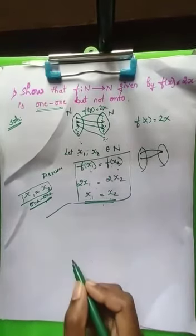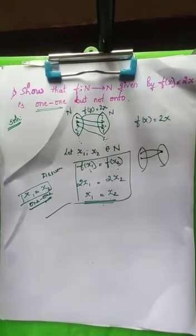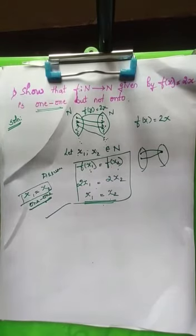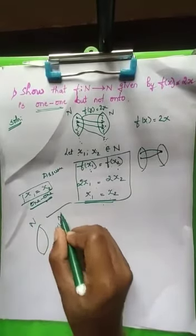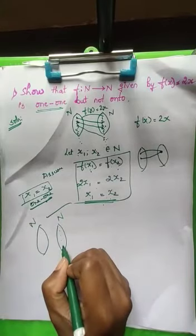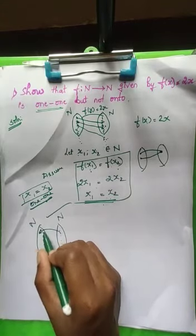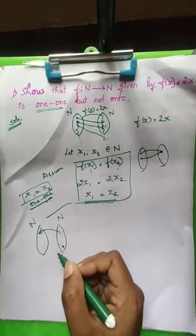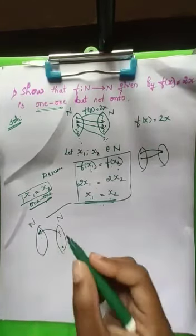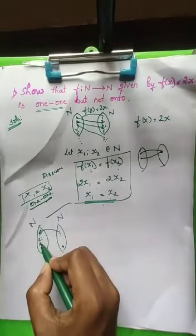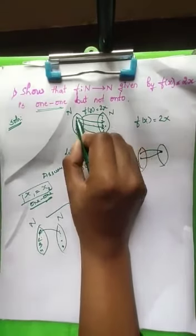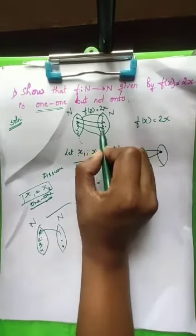We have proved the function is one-one. Now we have to show it is not onto. When we have to say a definition is wrong, we take one example that contradicts it. The onto condition says whatever element you take from the co-domain set should be the image of some element in the domain set. But as we saw, whatever elements we take from the domain are mapped only to even numbers.